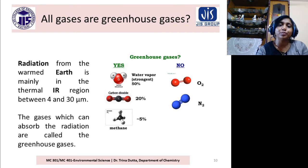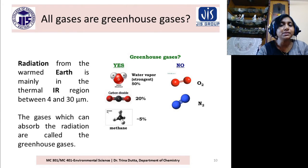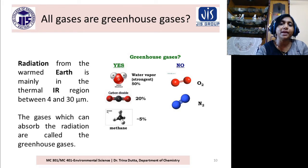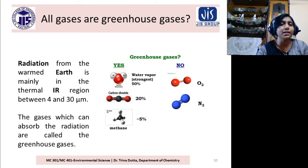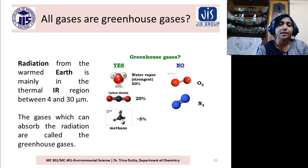Because they have dipole moment, they are IR active — meaning they absorb radiation in the frequency range of 4 to 30 micrometers. For example, CO2 absorbs radiation at 15 micrometers, which is in the range of 4 to 30 micrometers. But O2 and N2 are IR inactive as their dipole moment is zero.